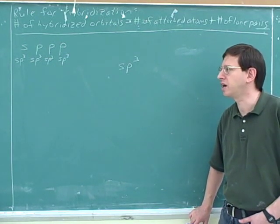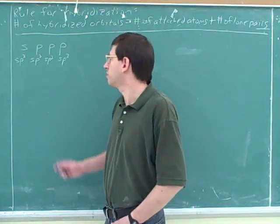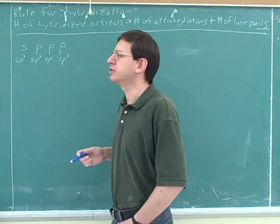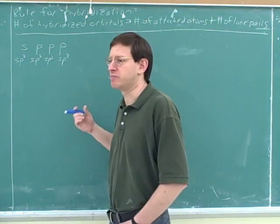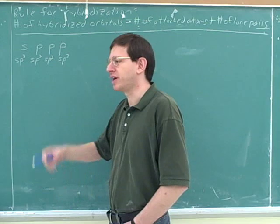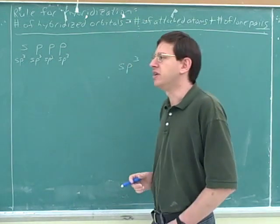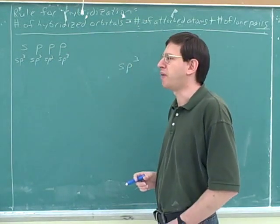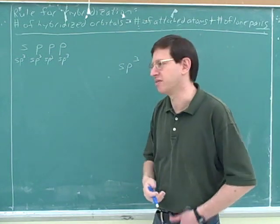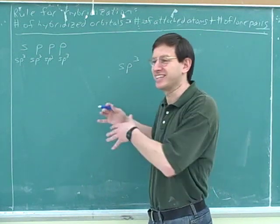Something we used here is what we could call the conservation of orbitals. We were hybridizing four orbitals, so we produced four hybridized orbitals. The number of orbitals you hybridize equals the number of hybridized orbitals you produce — just like the number of bottles of juice you put into the blender equals the number of bottles you get out, as long as there's no leak in the blender.